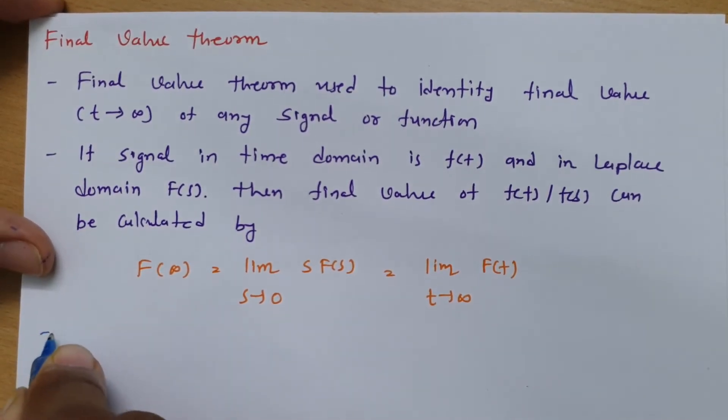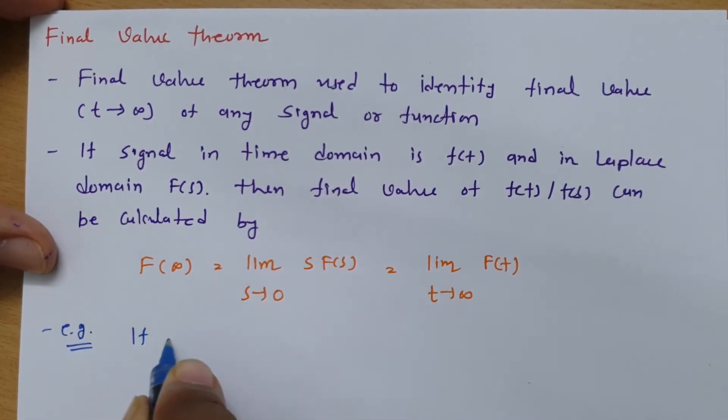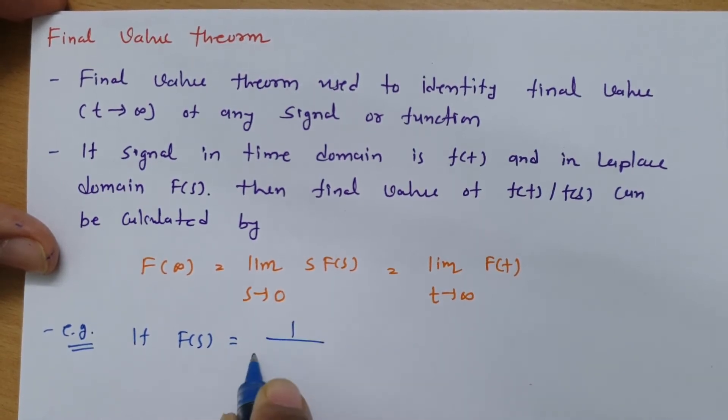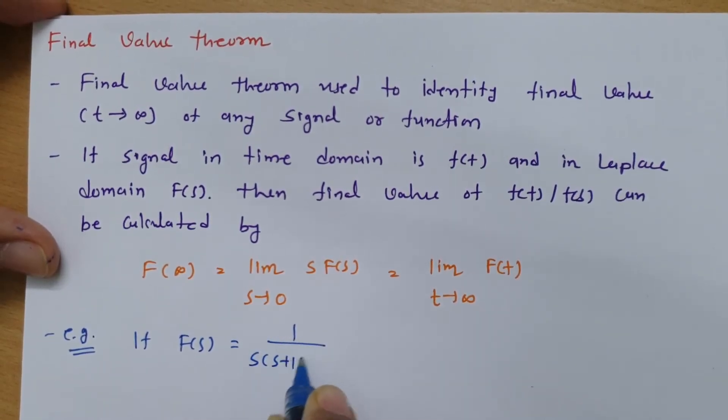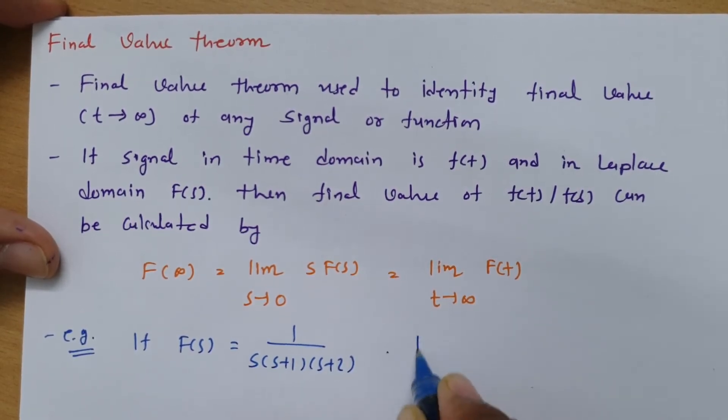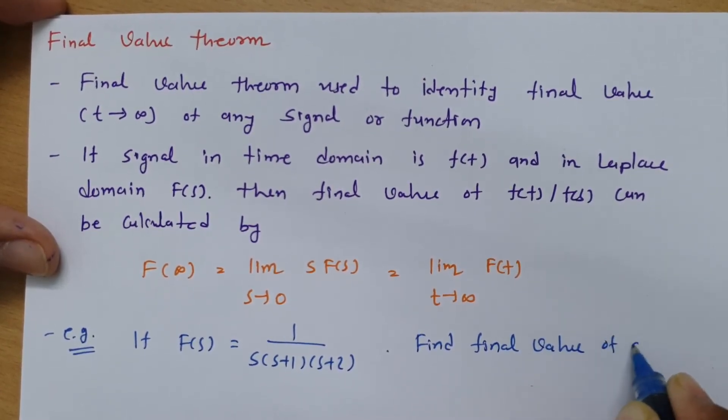Here I am having one example where the function is given as F(s) equals 1 divided by s(s+1)(s+2). The question is find the final value of the given function.